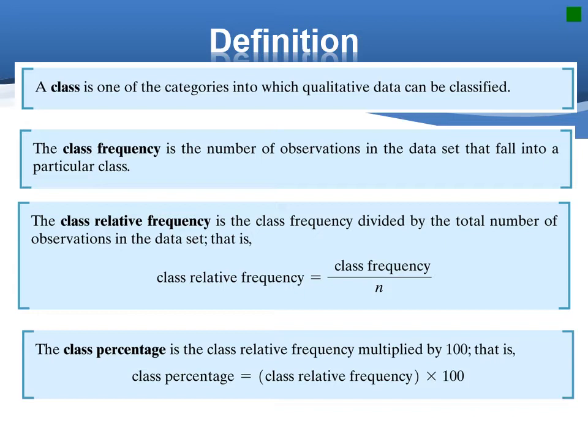Or two, by computing the class relative frequency, the proportion of the total number of observations falling into each class, which is the class frequency divided by the total number of observations in the dataset. The class percentage is that we translate the class relative frequency into percentage.